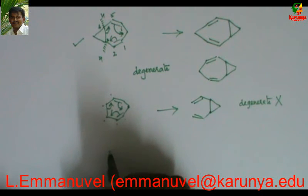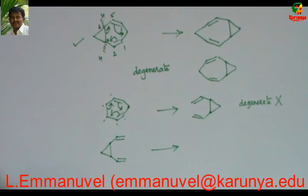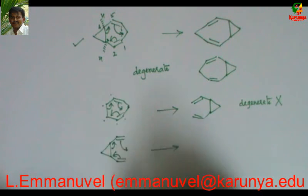What about the third one? Now, this compound, again it is 1,5-diene. It can undergo cope rearrangement.